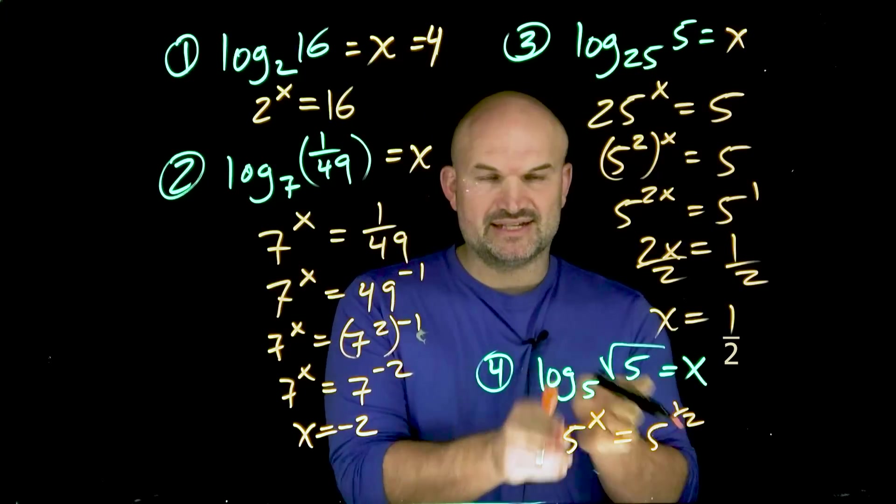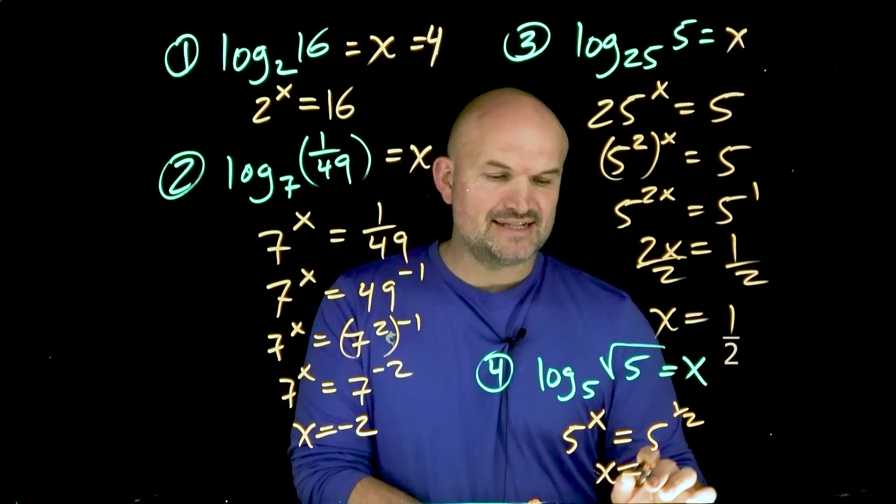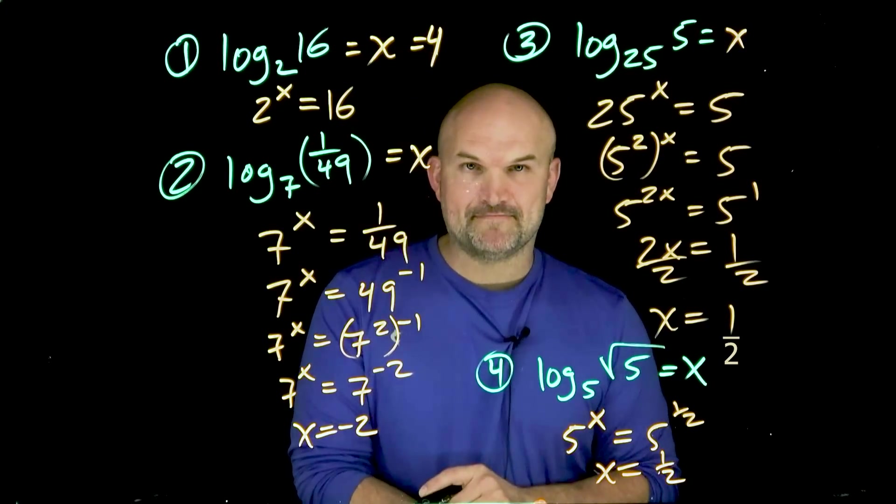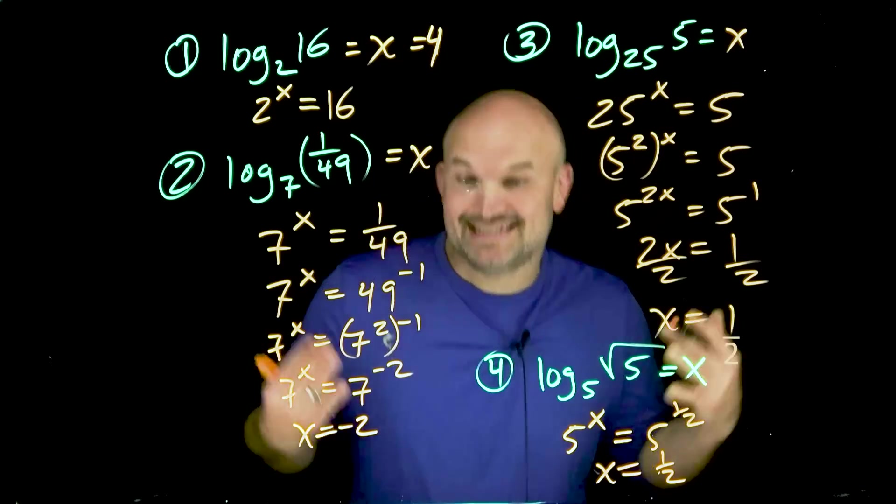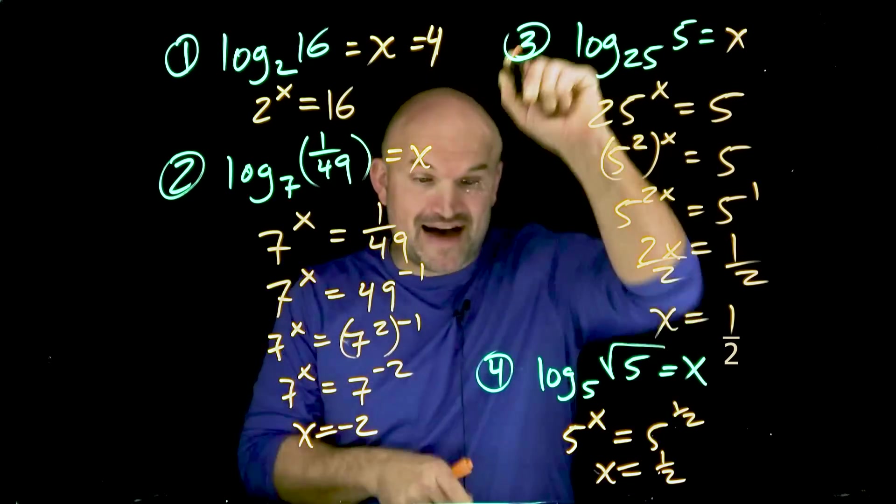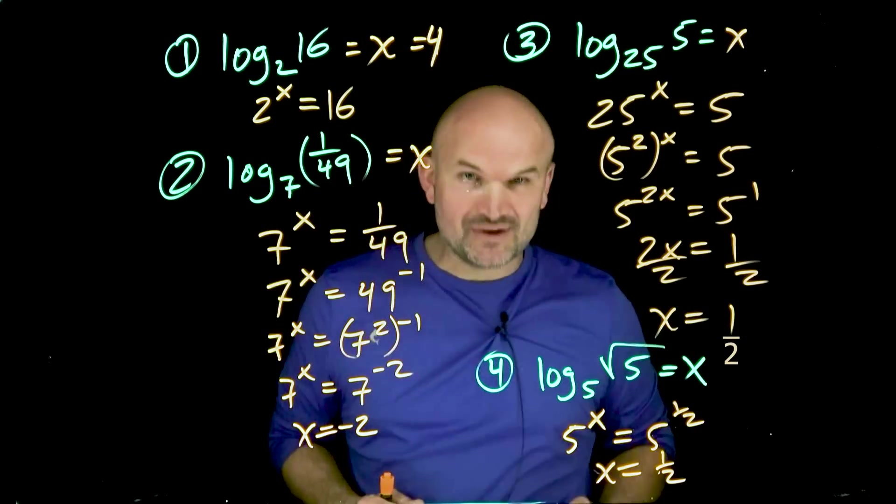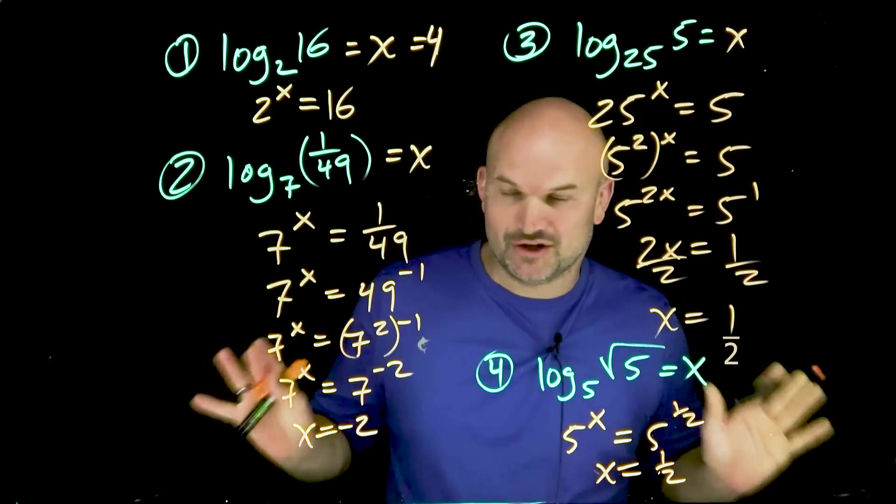Now, hopefully you recognize, you can see I have the one-to-one property. X is going to equal 1/2. Let's get into the last example. But if you can basically follow what I'm doing for each of these four examples, you're basically almost all the way there.